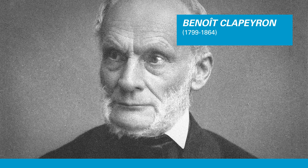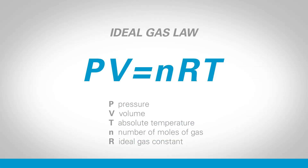In 1834, a full 170 years after Boyle published his law relating pressure and volume, the chemist Benoit Paul-Emile Clapeyron finally drew the work of Boyle, Charles, Guy-Lussac and Avogadro together to form an equation which comprehensively describes the state of gases: the ideal gas law.